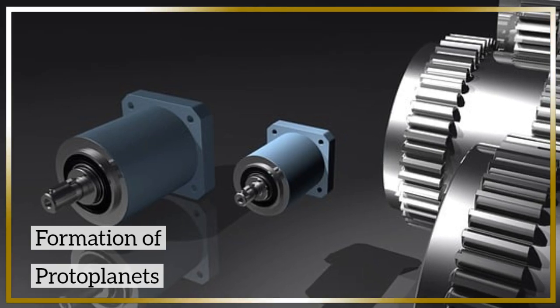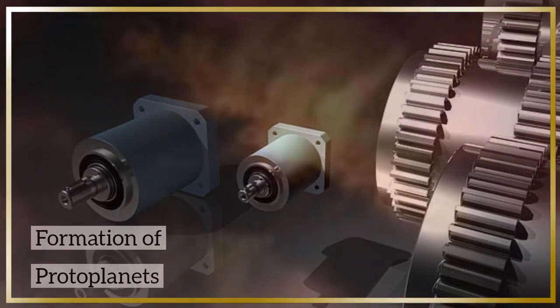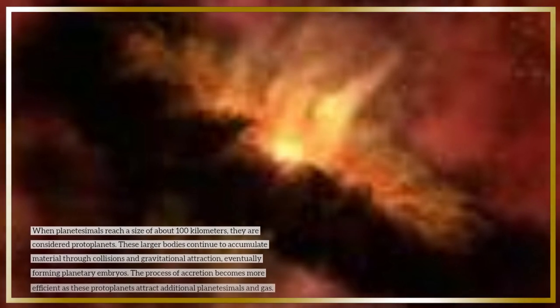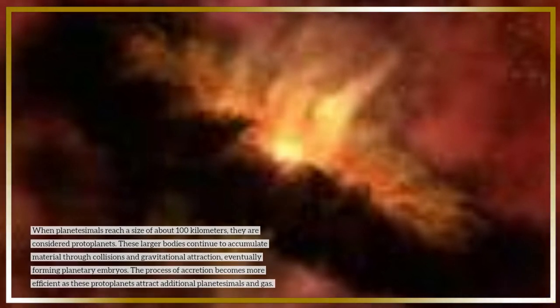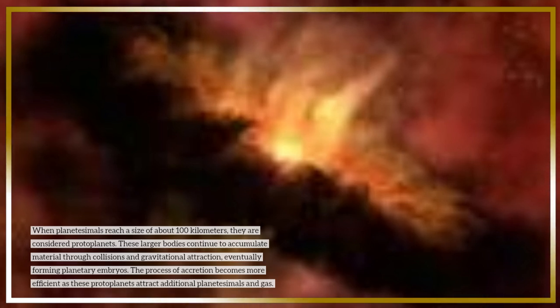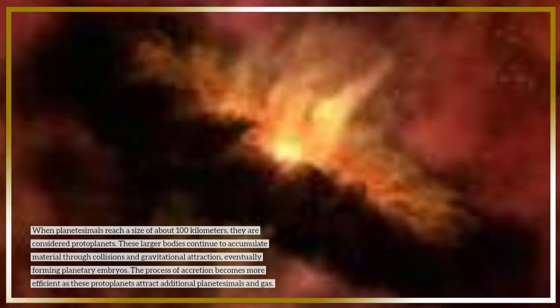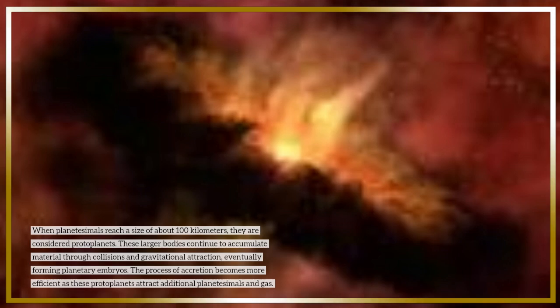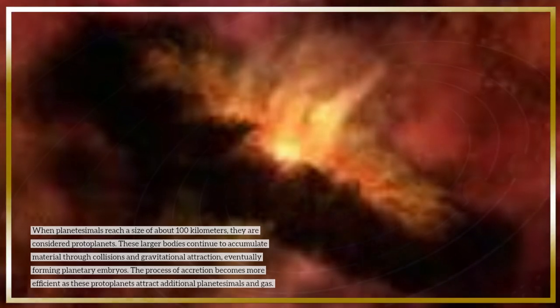Formation of protoplanets. When planetesimals reach a size of about 100 kilometers, they are considered protoplanets. These larger bodies continue to accumulate material through collisions and gravitational attraction, eventually forming planetary embryos. The process of accretion becomes more efficient as these protoplanets attract additional planetesimals and gas.